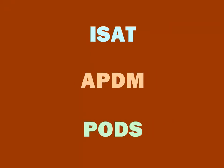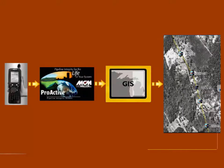ProActive also integrates with ISAT, APDM, and PODS pipeline databases, allowing for integration of your corrosion control data with geographical information systems. With ProActive tightly integrated with your GIS, risk, and threat assessment applications, you can access your corrosion control data with guaranteed stationing synchronization.